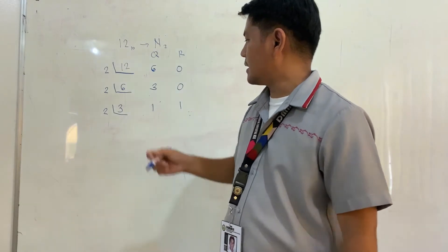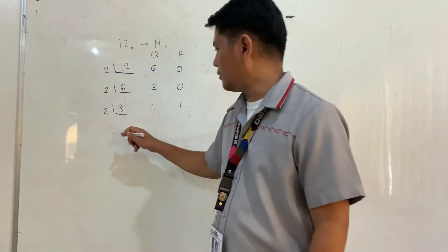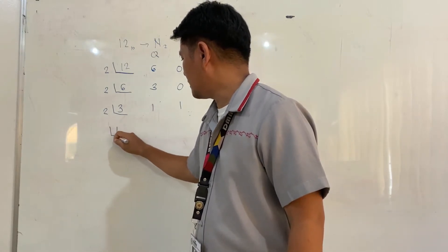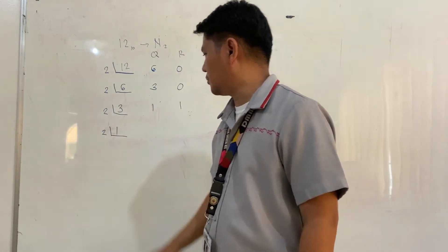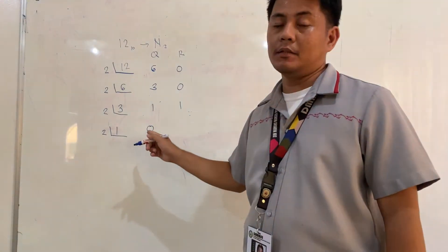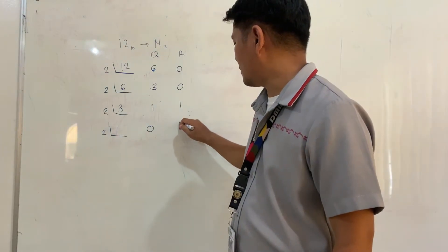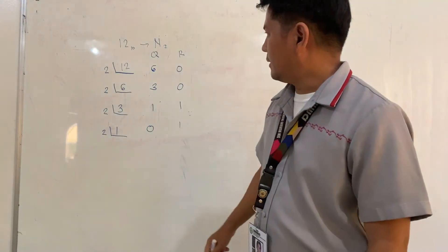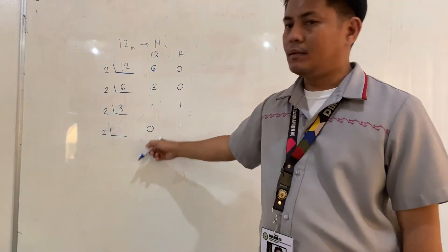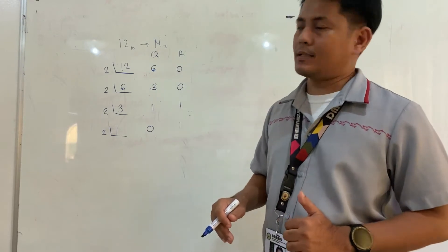Since the quotient is not yet equal to 0, we still continue the process. We divide 1 by its base 2, and we get 0. So 1 divided by 2 gives us quotient 0 and remainder 1. Since we already obtained 0 as the quotient, we stop the process.